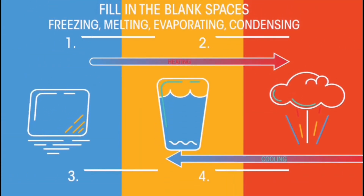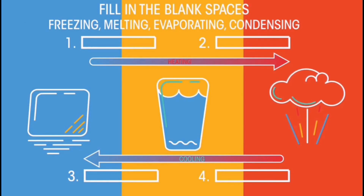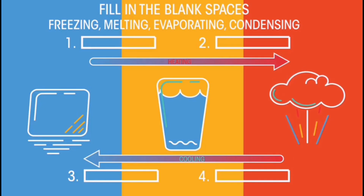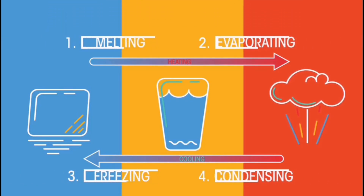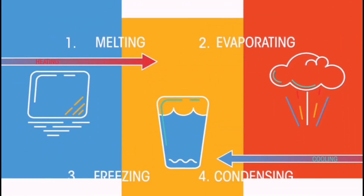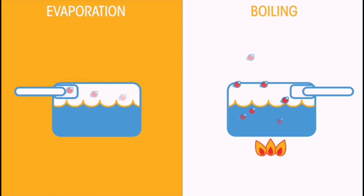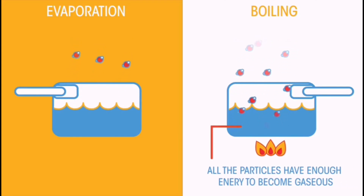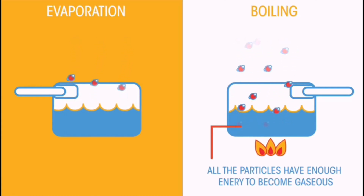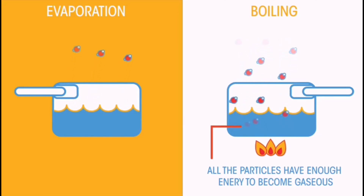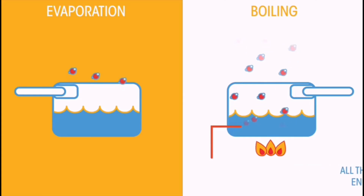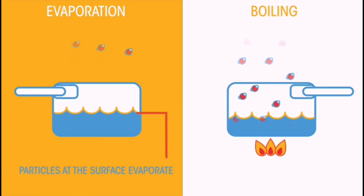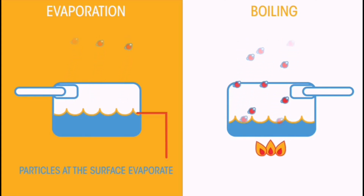These four words describe changes in state. Do you know which word refers to which change? Pause the video, fill in the gaps, and click play when you're ready. Do you know the difference between evaporation and boiling? Both are when a substance transforms from a liquid to a gas. Think of a boiling pan of water — all of the water bubbles because all the particles have enough energy to become gaseous. But water standing in a pan heated only by the environment can also turn into a gas — this is evaporation. Only the particles at the surface have enough energy to change from a liquid to a gas. Hence, evaporation is a slower process than boiling, even though it achieves the same state change.